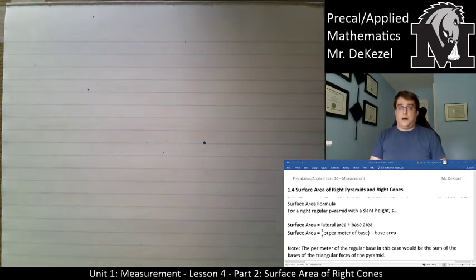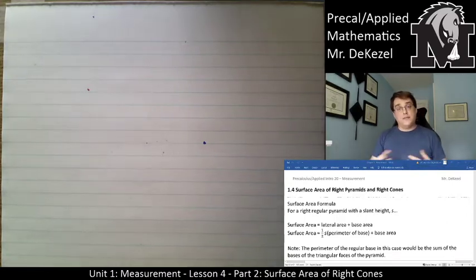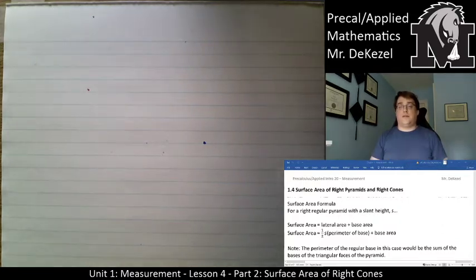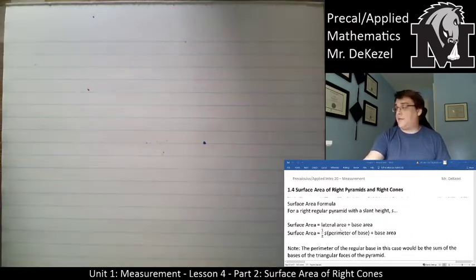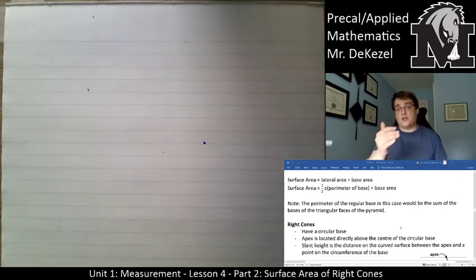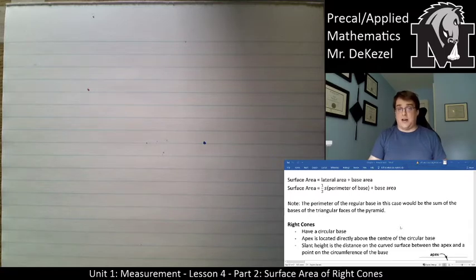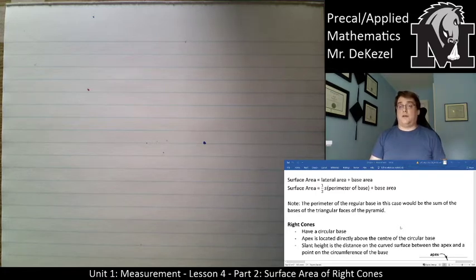The lateral area was always a half times the slant height times the base, taking into account the different lengths a base could be. The perimeter of the regular base is the sum of the triangular faces of the pyramid. If the base side is five, then five plus five plus five gives you 15 for a triangular pyramid; adding another five gives 20 for a square or rectangular pyramid.